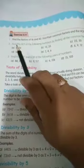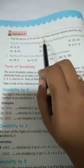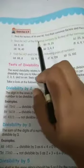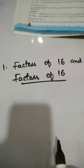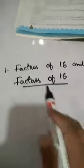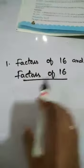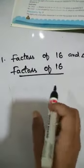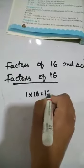So we have to find the factors of 16 and 40, find their common factors and the HCF. So let us solve this. So here we have to find the factors of 16 and 40. Firstly, factors of 16: 1 into 16 equals to 16.